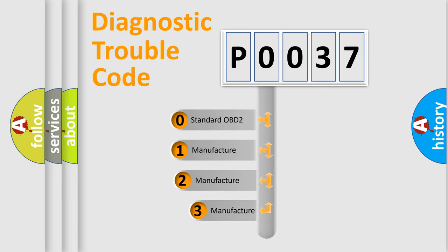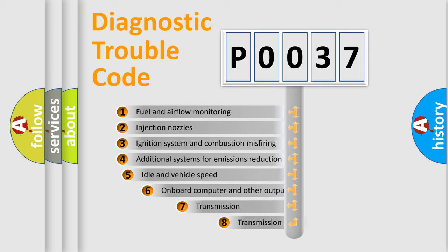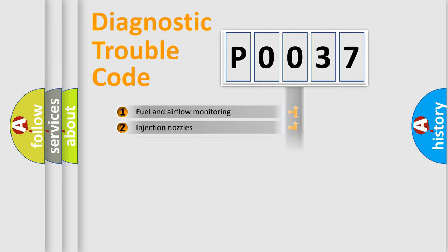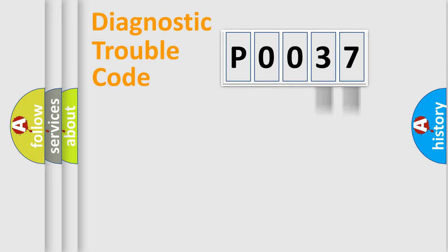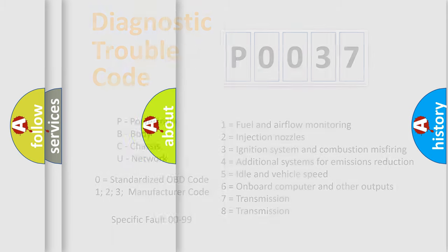If the second character is expressed as zero, it is a standardized error. In the case of numbers 1, 2, or 3, it is a more specific expression of a car-specific error. The third character specifies a subset of errors. This distribution is valid only for the standardized DTC code, and only the last two characters define the specific fault of the group. This division is valid only when the second character is expressed by the number zero.